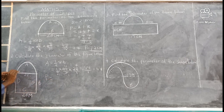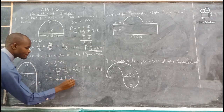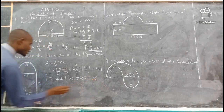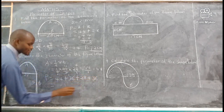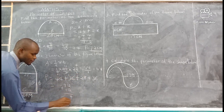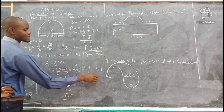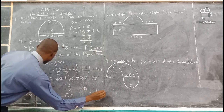So the perimeter is A plus B plus C plus D: 44 plus 36 plus 28 plus 36. Now we have gone around the figure, starting here and coming back to where we started. Adding: 36 plus 36 gives 72, and 44 plus 28 gives 72. So 72 plus 72 gives 144. The perimeter is 144 meters.